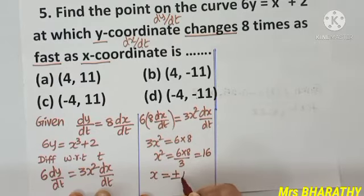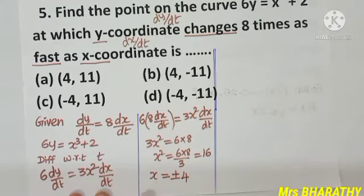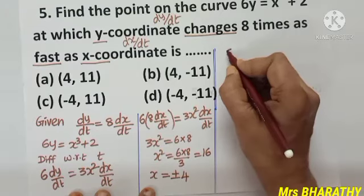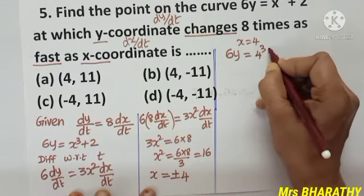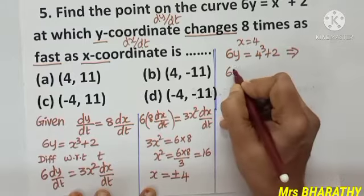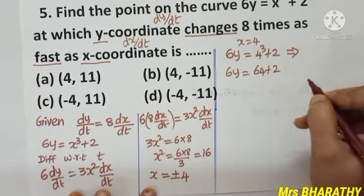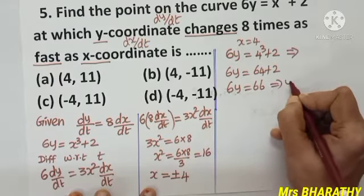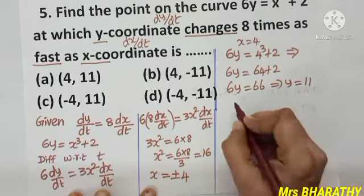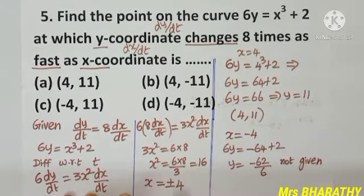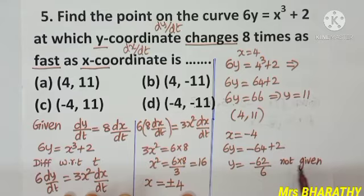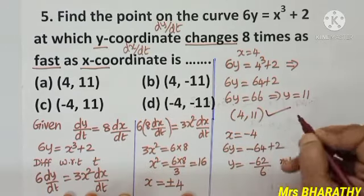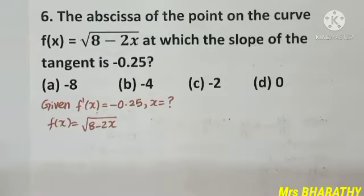Substituting x = 4: 6y = 4³ + 2 = 64 + 2 = 66, so y = 11. One answer is (4, 11). For x = −4: 6y = −64 + 2 = −62, but this answer is not among the options. So the right option is (4, 11), that is option 8. Question number 6.